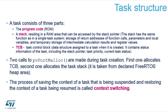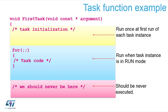When you do a switch from one task to the other, it's called context switching. Effectively the context — the registers — are stored in the PCB, and the new task restores the registers from its own PCB, and then it's switched too. Here you can see an example of a task function.